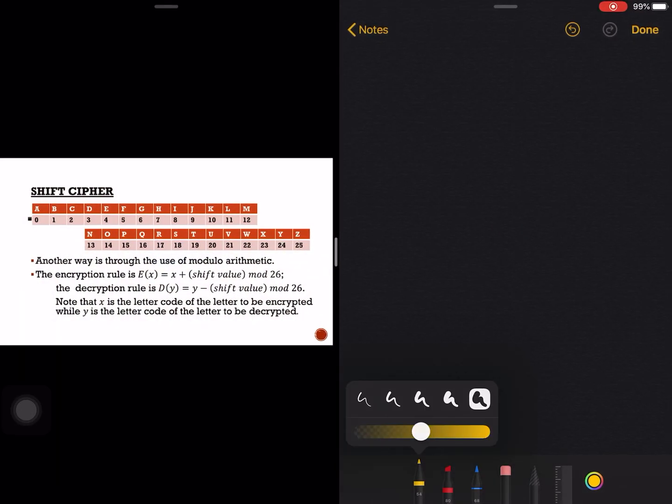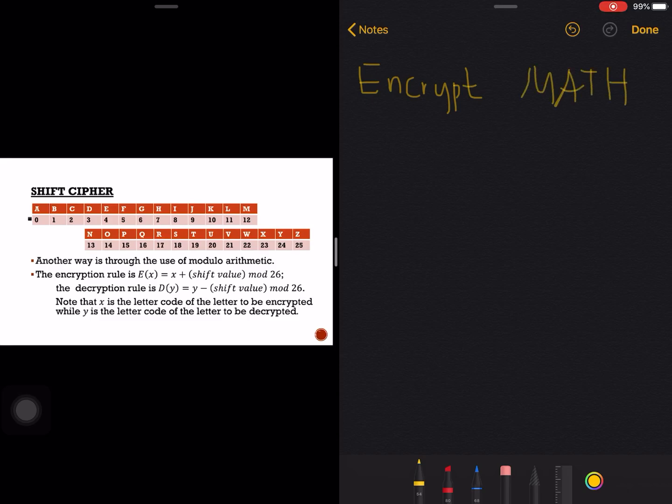For example, let's encrypt the word MATH. Here, let's say we are to encrypt the word MATH and say our key is with key equals say 12.